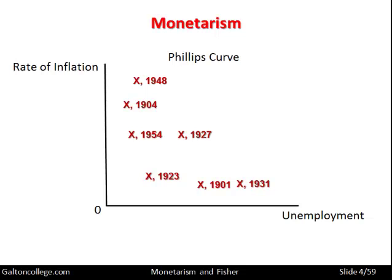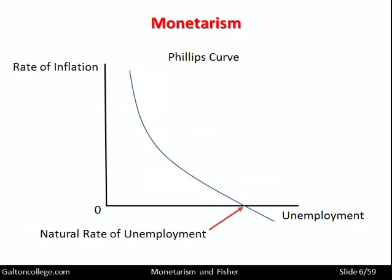He then did something particularly clever. He fitted a curve of best fit — not a straight line as in ordinary regression analysis — and found this curve, which became known, unsurprisingly enough, as the Phillips curve. The point where inflation is equal to zero we termed the natural rate of unemployment, that is the level of unemployment at which there is no inflation.